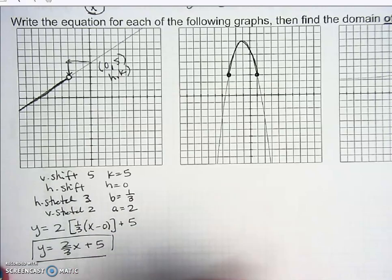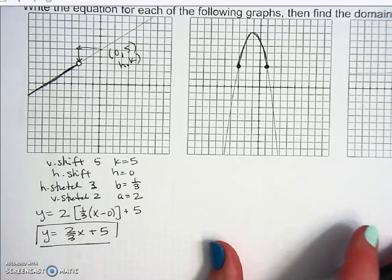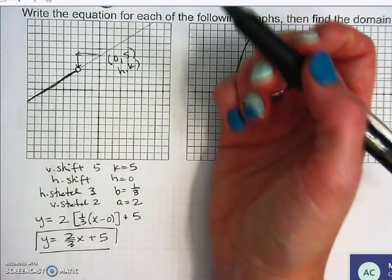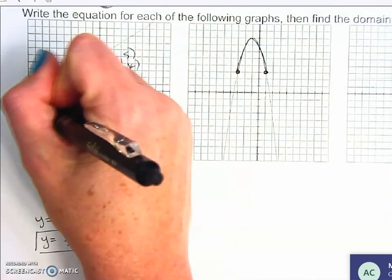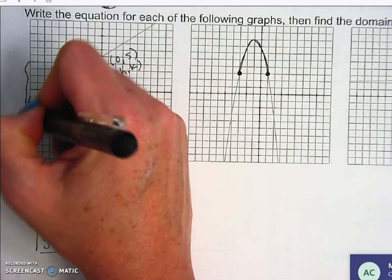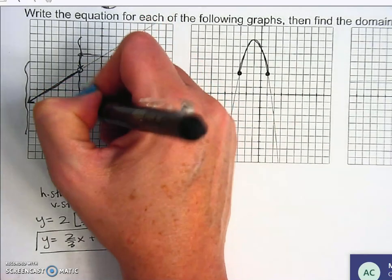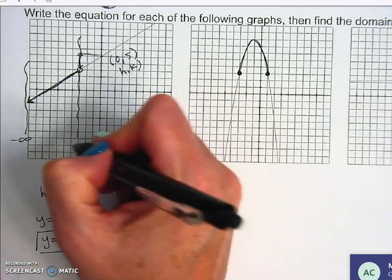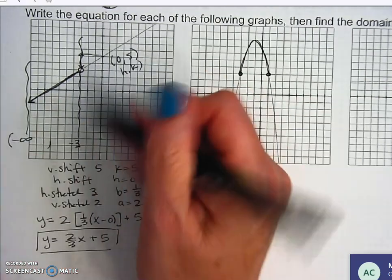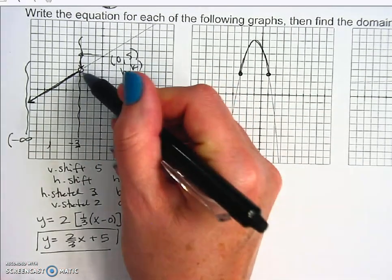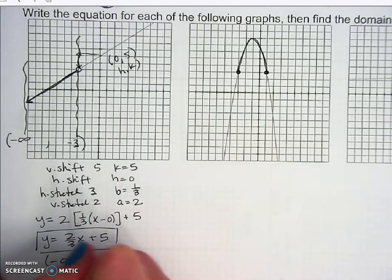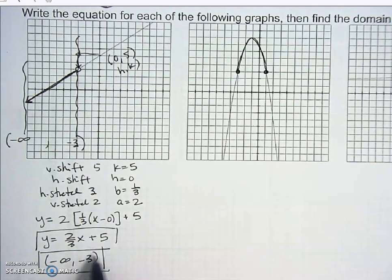You can write the equation as y equals 2 times one-third times x minus zero plus five. Since x minus zero is just x, and one-third times two is two-thirds, this simplifies to y equals two-thirds x plus five. The domain restriction runs from negative infinity to negative three, and at negative three the circle is open, so negative three is excluded.